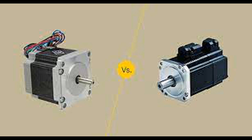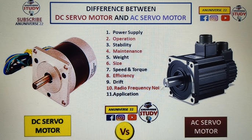Capacitor start motors employ a capacitor in the auxiliary winding to create a larger phase shift, providing higher starting torque. They are often found in applications requiring high starting torque, such as air compressors and refrigeration units.